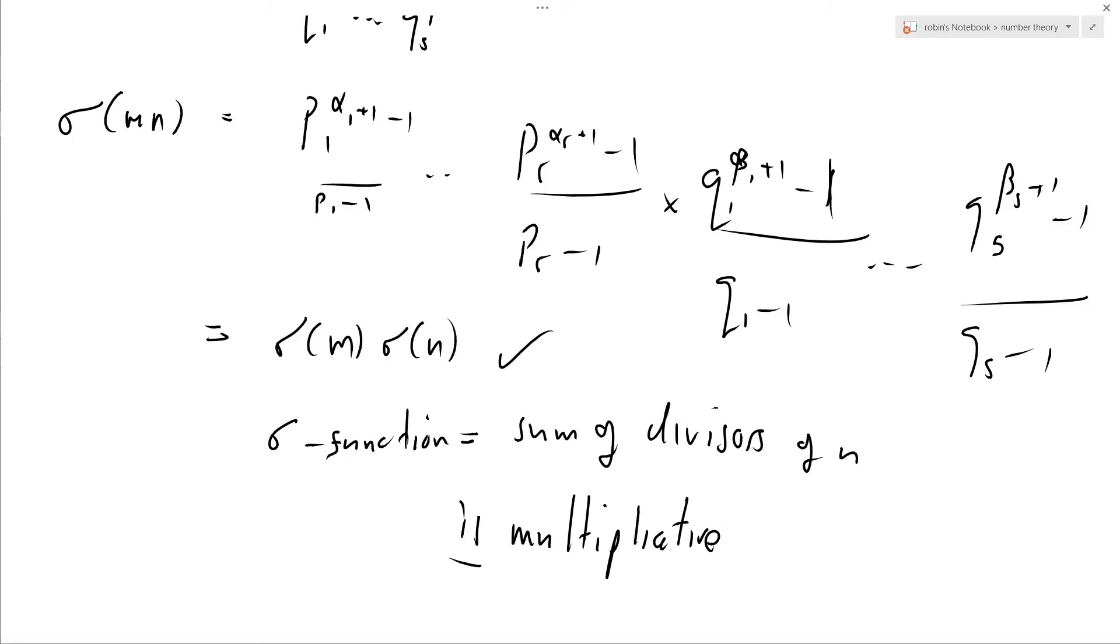And that's why you do it like this. You define the sigma function the way you do, so that the function itself is multiplicative. For example, if you're wondering why do you include the number itself, why do you include n as a divisor of n when you're adding them all together, well, the answer is because the function that you get is multiplicative.